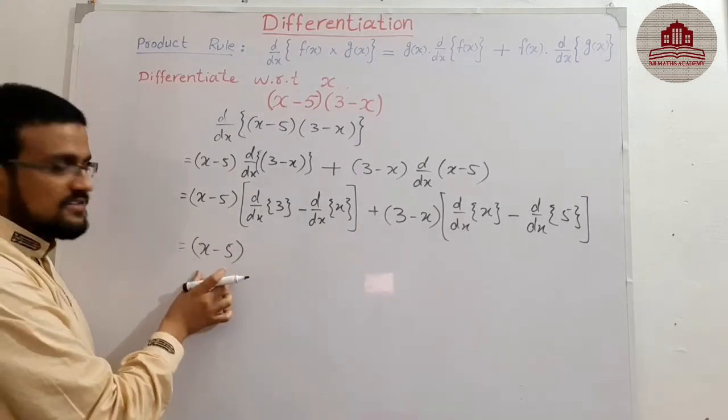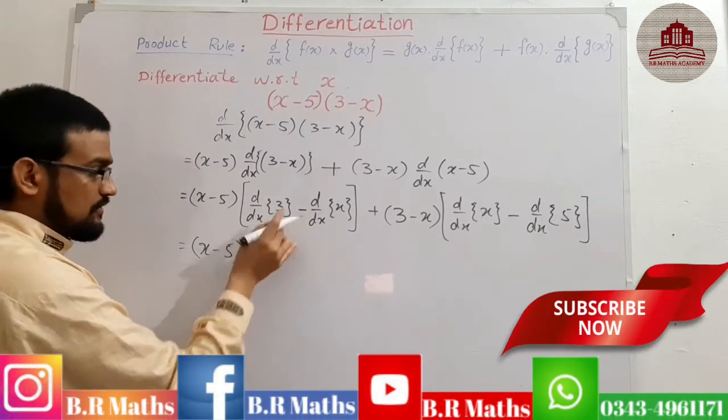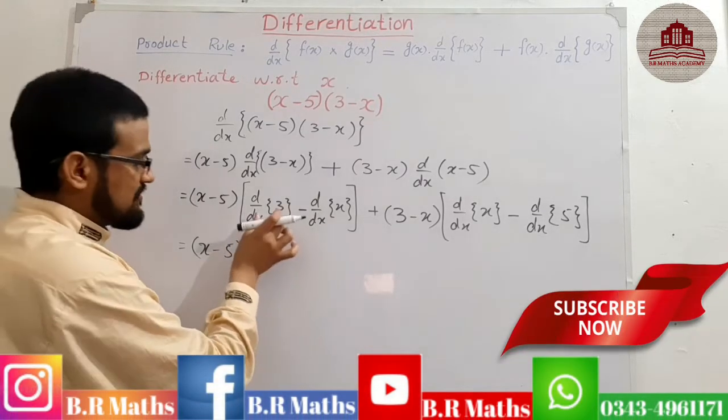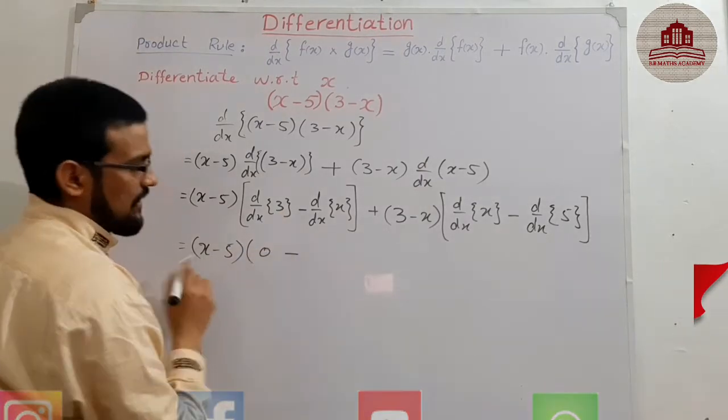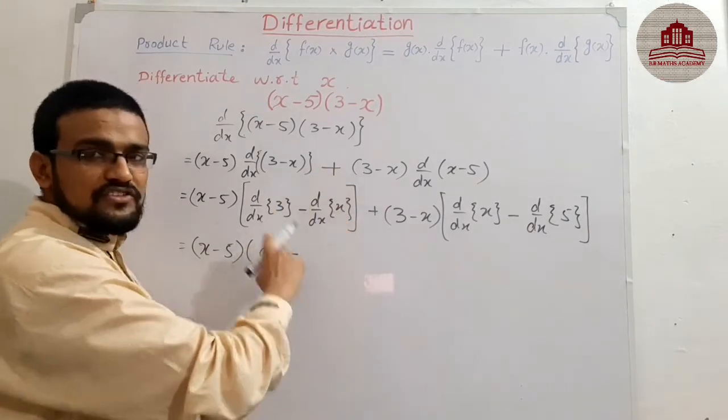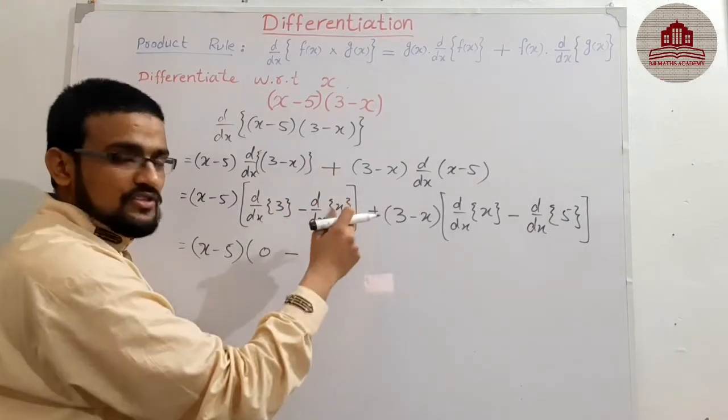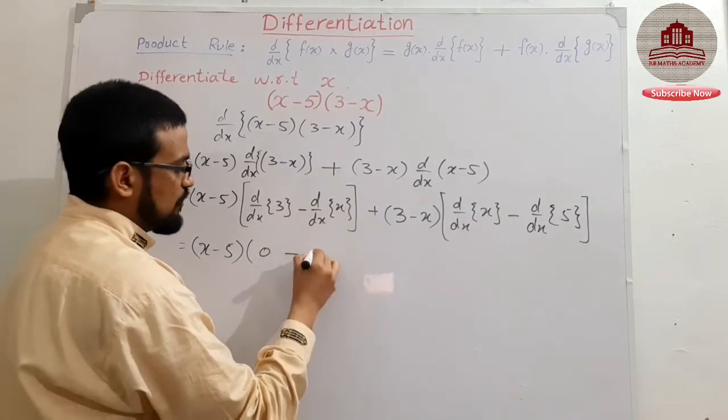(x - 5) as it is, then derivative of 3 is, 3 is the constant, it means derivative of 3, the constant, is 0, minus derivative of x. x raised to power 1, 1 start, and 1 minus 1 is 0. It means the derivative of x is always 1.